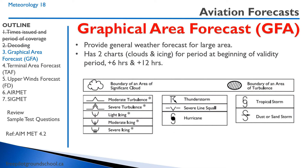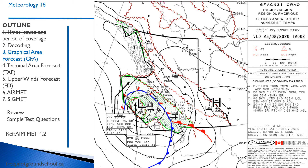The graphical area forecast provides a weather forecast for a large area — not very specific, but it might cover all of Ontario or all of the Prairies. Here's an actual GFA — Pacific region, so British Columbia. It was issued February 22nd, 2020 at 2332 Zulu, valid on February 23rd, 2020 at 1200 Zulu. This is the one forecasting about 12 hours out, created 12 hours before the validity period.